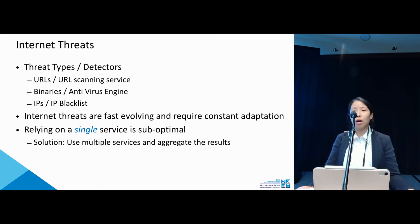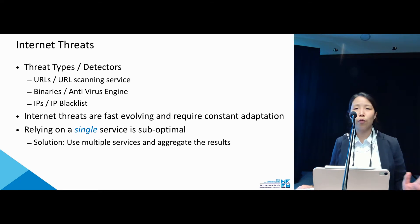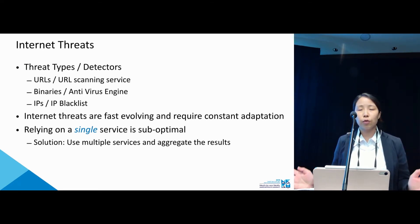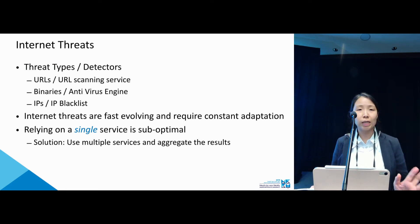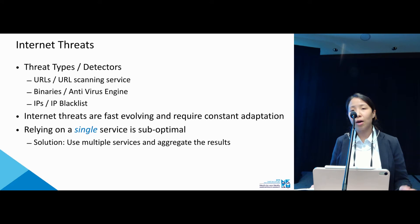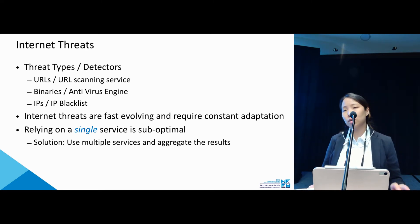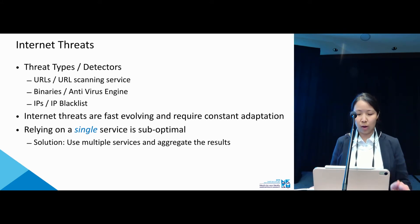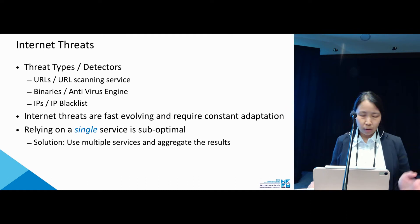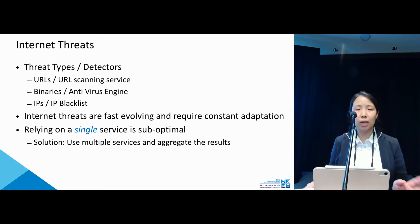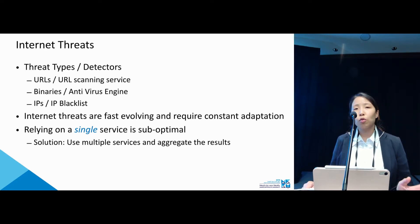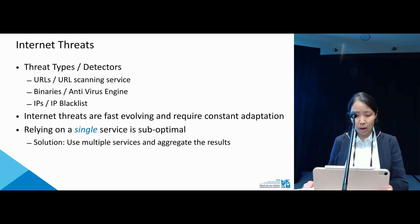There are many types of internet threats such as malicious URLs, malware files, and malicious IPs. Typically these different types of internet threats are detected by different detectors such as the URL scanning service, antivirus engines, and the IP blacklist. However, internet threats are fast evolving and detectors need to constantly adapt. Relying on a single source is suboptimal because performance will greatly depend on that single service, so we need to use multiple services and aggregate the intelligence.